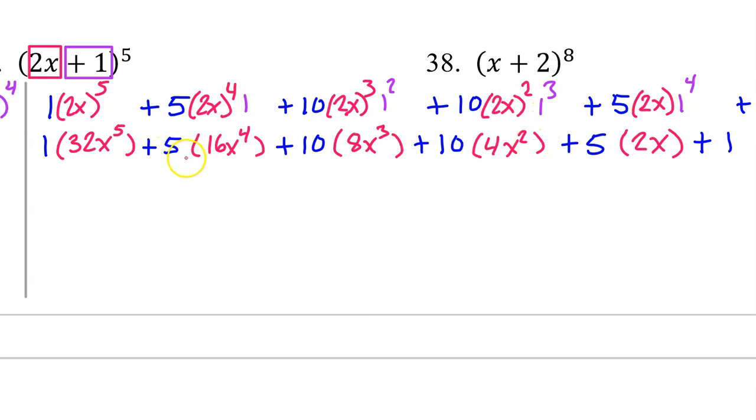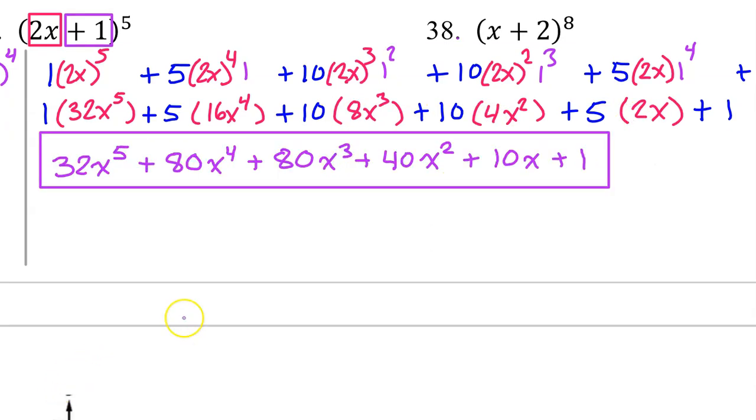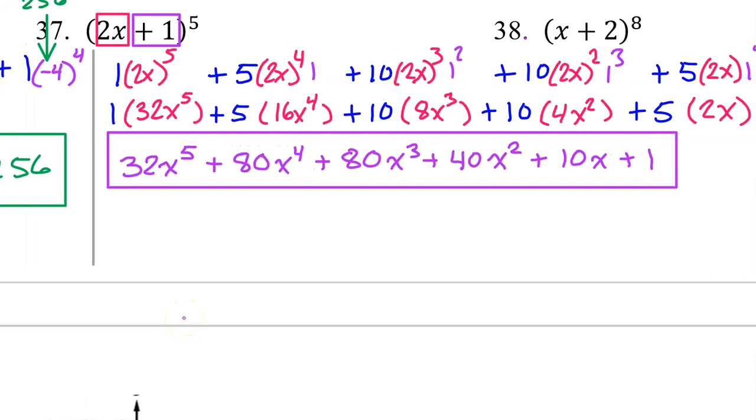So now, for the final answer, I can just multiply these numbers together, like 5 times 16, 10 times 8, 10 times 4, and 2 times 5. So this is the answer to number 37.